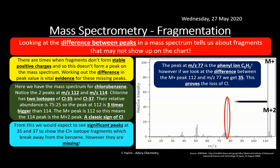We'd expect to see significant peaks at 35 and 37 for Cl plus isotope fragments, but they're missing or tiny — proving that chlorine plus isotopes aren't actually formed. However, looking at the difference between the M plus peak at 112 and M/Z 77, we get 35. This proves the loss of a chlorine atom. The chlorine breaks off as a radical and isn't detected, but the remaining phenyl ion C6H5 plus is evident, and the loss of 35 confirms a chlorine atom was attached to the molecule.